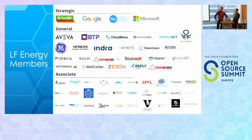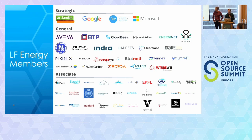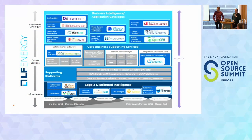Today, LF Energy has over 50 members, including distribution system operators and transmission system operators like RTE, TenneT, EnergyNet and Statnett, but also several universities and large corporates like Microsoft, Google and GE. Currently OpenSTEF is one of 18 projects hosted within LF Energy. These projects have a really broad scope — it includes projects in the application domain like OpenSTEF, but also projects in the edge domain like Flexpower.